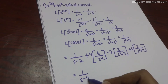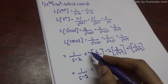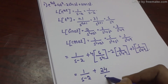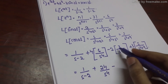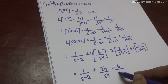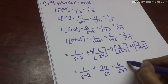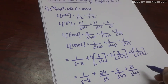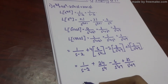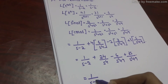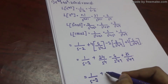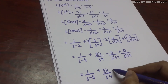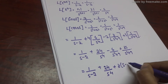Simplifying: 1 by s minus 2 plus 24 by s power 4. Then combining the sine and cosine terms over the common denominator s square plus 9: taking 3 as common gives 3 into s minus 2 by s square plus 9. So the final answer is 1 by s minus 2 plus 24 by s power 4 plus 3 times (s minus 2) by s square plus 9.